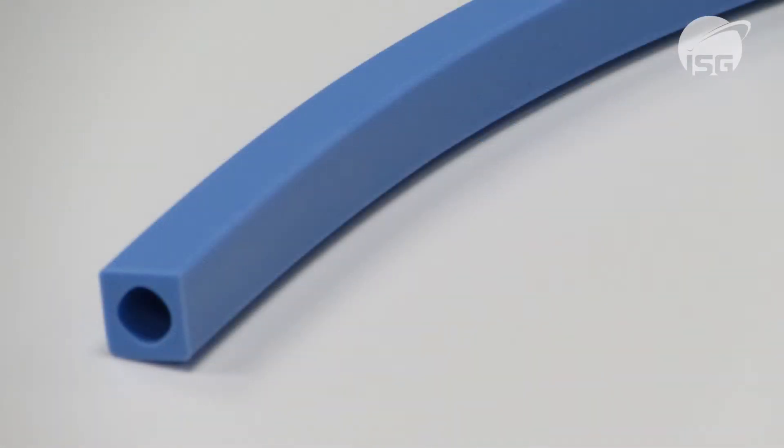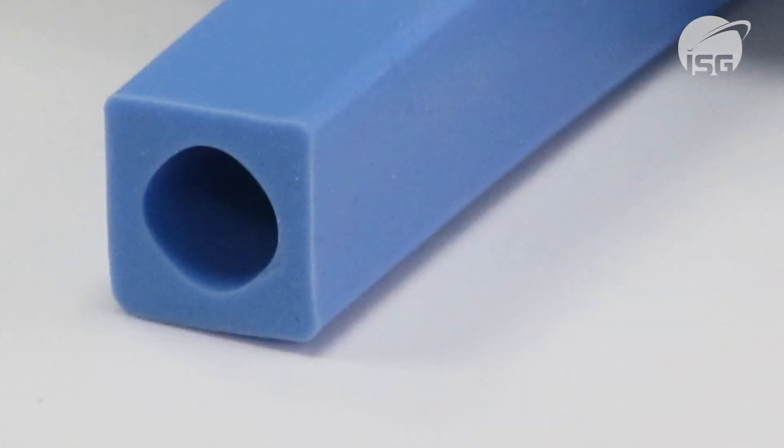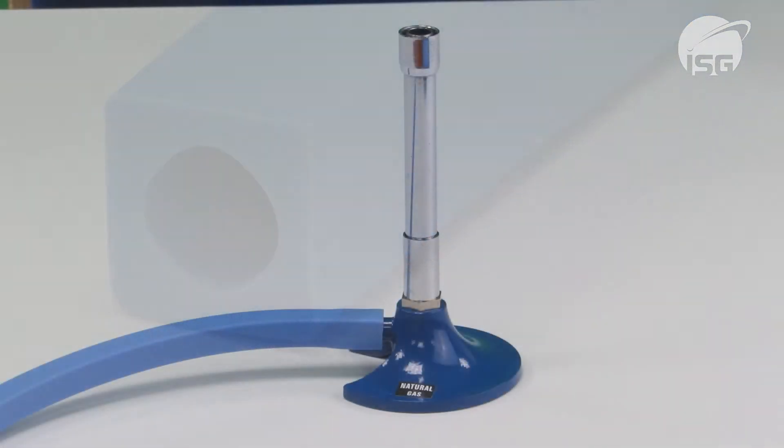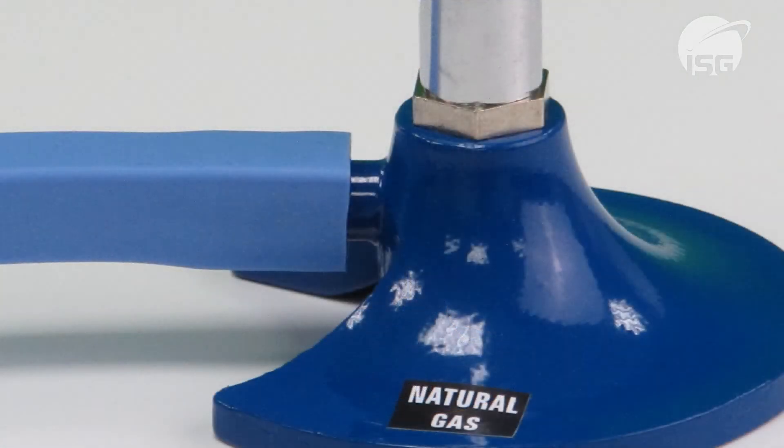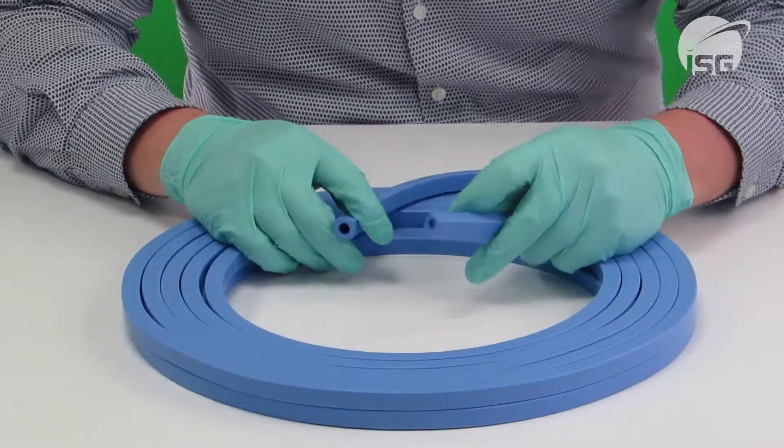The ISG Enduroflex tubing is an innovative square form tubing designed for general laboratory use. This tubing is made from a polymer blend which is designed to replace natural rubber and is guaranteed to last 10 times longer. The tubing will not perish and is resistant to UV rays.